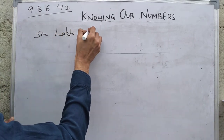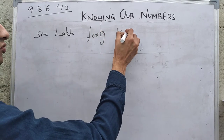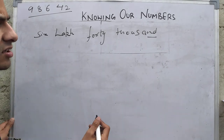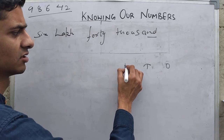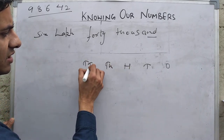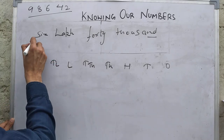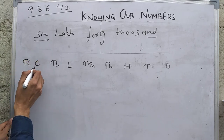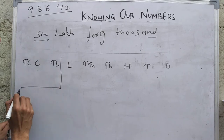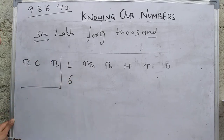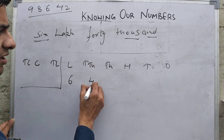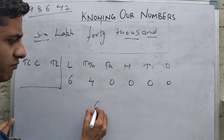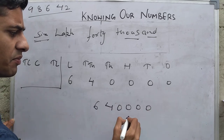For example: 6 lakh 40,000. To write the number for it, you can make a place value chart with columns for ones, thousands, 10 thousands, lakhs, 10 lakhs, and crores. They say 6 lakh — how many 10 lakhs? None. How many crores? None. 6 lakh means 6 in the lakhs place. How many thousands? They say 40,000, so 4 in the 10 thousands place. There is nothing after it, so the remaining places become zero.